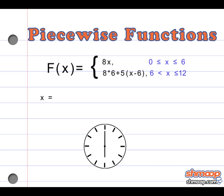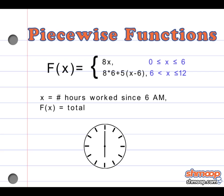x is equal to the number of hours worked since 6 a.m., which is why the second half of the function, which represents Yoko's earnings, contains x minus 6. Her shift doesn't start until noon, so the six hours before the switch don't apply. And of course, f(x) is the total earnings of the day.